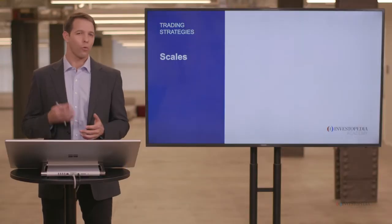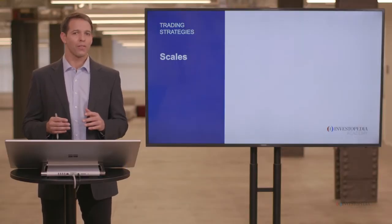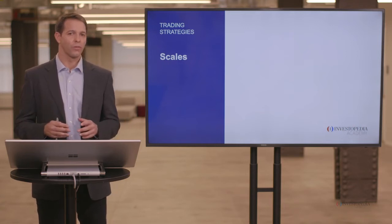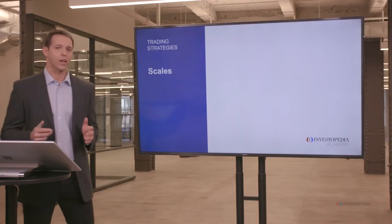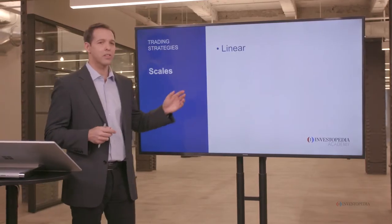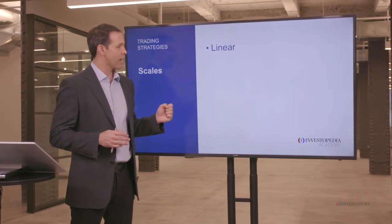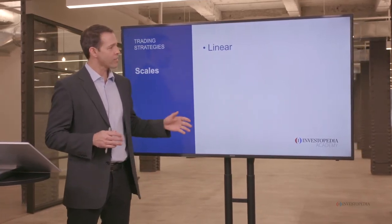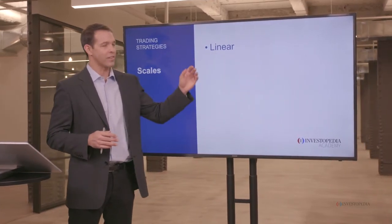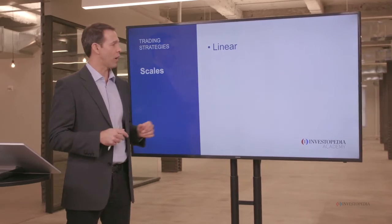When you're trying to figure out what type of chart you should use, you need to keep in mind that there are different types of scales. The first type of scale is known as linear, and this is the most common chart form. What this means is that the price axis and the time axis are on equal plots.